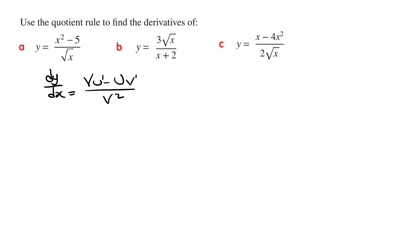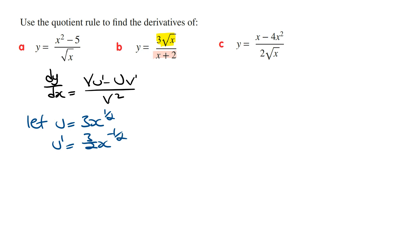Part B: y is equal to 3 times the square root of x over x plus 2. We're going to let u equal the top function and v equal the bottom function. If u equals 3 times the square root of x, which we write as 3 times x to the power of a half, then deriving this gives u dash equals 3 on 2 times x to the power of minus a half. v is x plus 2, and so v dash is going to be 1.